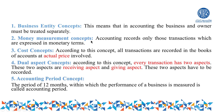Point number two is the Money Measurement Concept. According to this concept, accounting records only those transactions which are expressed in terms of money. We discussed earlier that there are two types of transactions: financial character transactions and non-financial character transactions. Only those transactions which are financial in character — expressed in terms of money — can be recorded in the book of account.